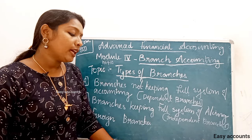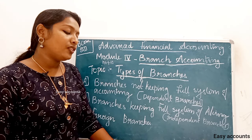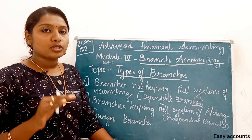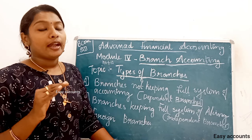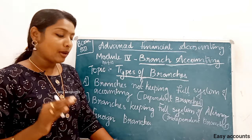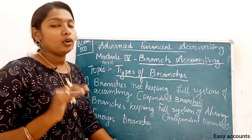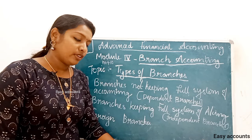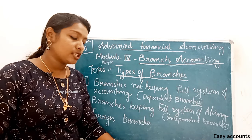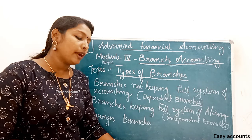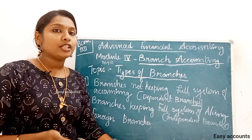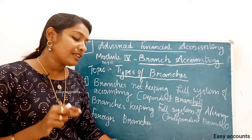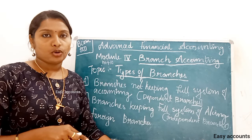The following are the usual transactions and entries relating to the Head Office Account in the branch books. For goods received from the Head Office: debit Goods Received from Head Office Account, credit Head Office Account. For cash or bank received from the Head Office: debit Cash or Bank Account, credit Head Office Account.